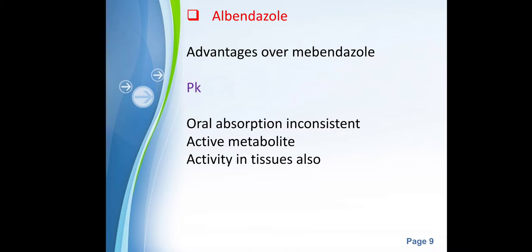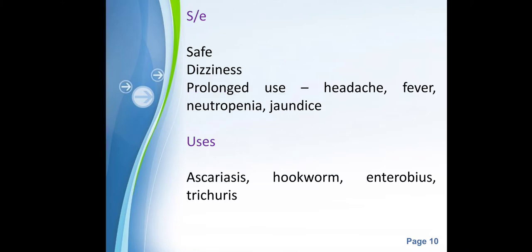Albendazole is also safer than mebendazole. Pharmacokinetically, its oral absorption is not consistent; it is converted into an active sulfoxide metabolite inside the body, which penetrates into tissues and has activity there. Due to its safety profile, albendazole is used in mass deworming programs — administered to large groups of children — and is given in such programs only because it is safe.